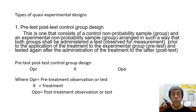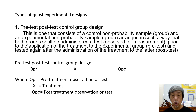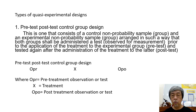There are four types of quasi-experimental designs. The first one is the pre-test, post-test control group design. This consists of a control non-probability sample or group and an experimental non-probability sample or group arranged such that both groups are administered a test prior to the application of the treatment to the experimental group, which we call pre-test, and tested again after the administration of the treatment, which we call post-test.